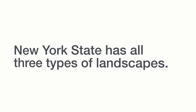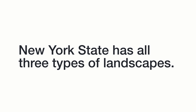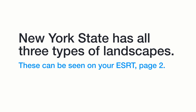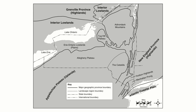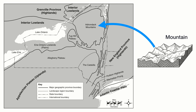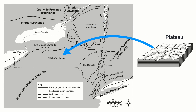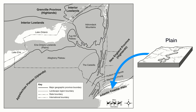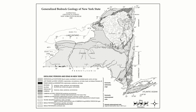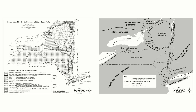Interestingly, New York State has all three types of landscapes — mountains, plains, and plateaus — and they are all affected by our local climate. You can see these landscapes in your earth science reference tables on page two. The map shows mountain regions like the Adirondack Mountains, plateau regions like the Allegheny Plateau, and even plains like Long Island or the Atlantic Coastal Plain. You will often use this landscape map in conjunction with the bedrock map of New York State to tell the type and age of rock in the various landscape regions found within the state.